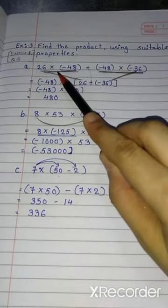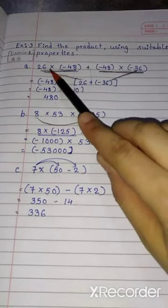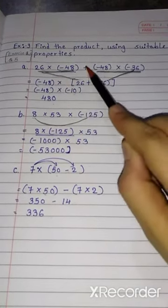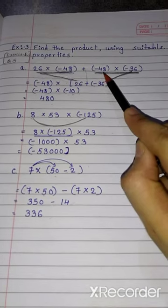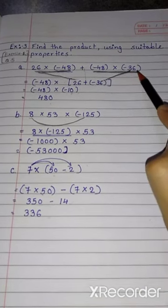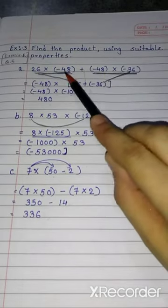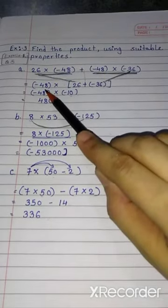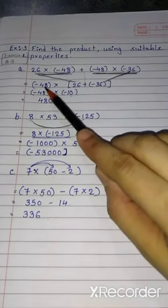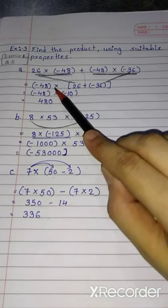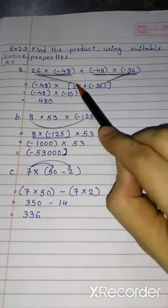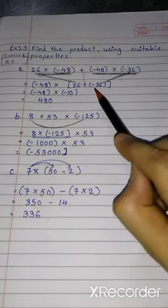Here we are dividing these numbers into two groups. 26 into minus 48 plus minus 48 into minus 36. Minus 48 is common in both the groups, so we are writing it separately. Then minus 48 into what is remaining? 26 plus minus 36.